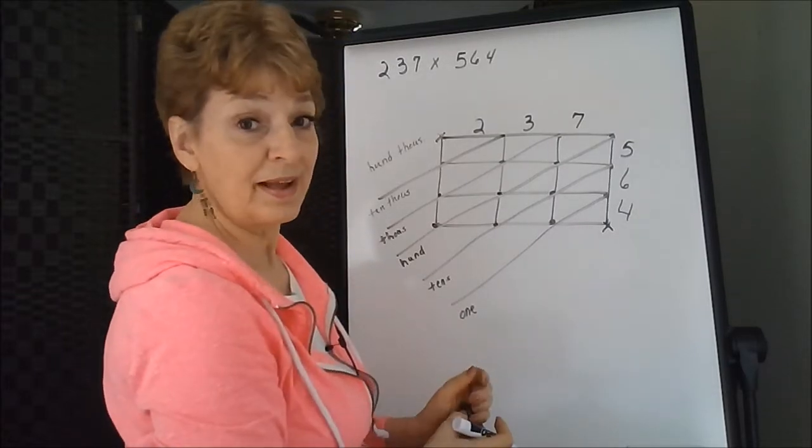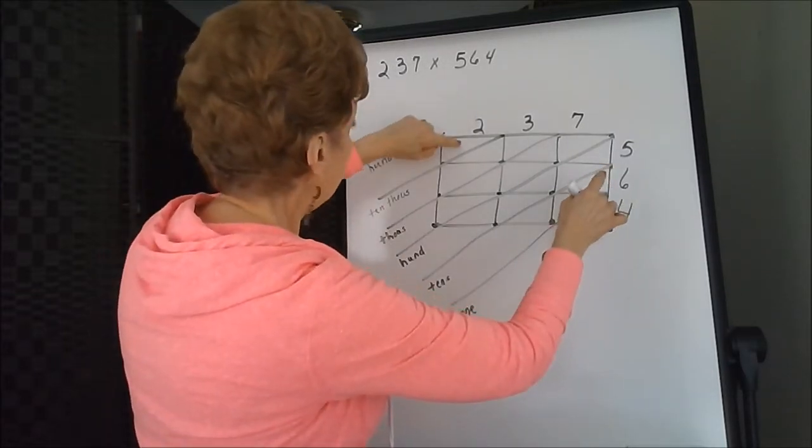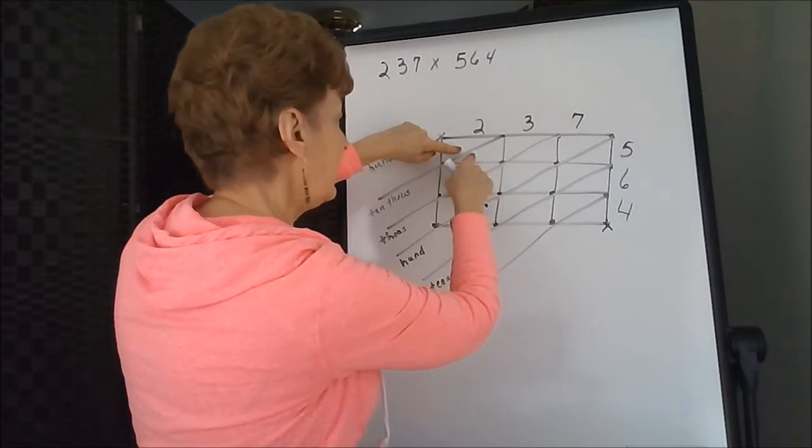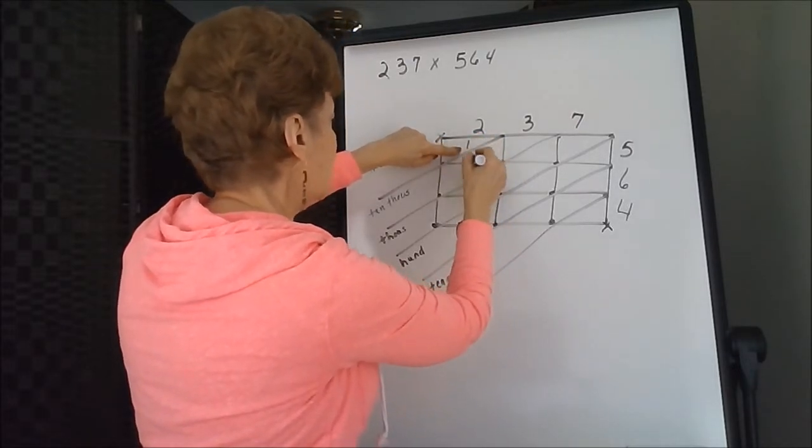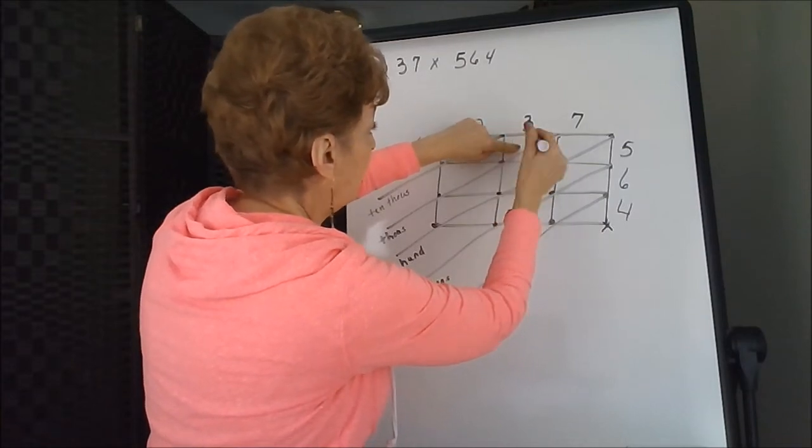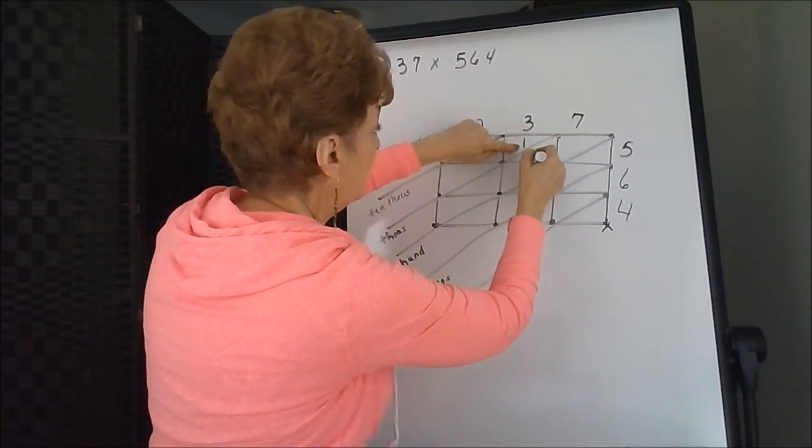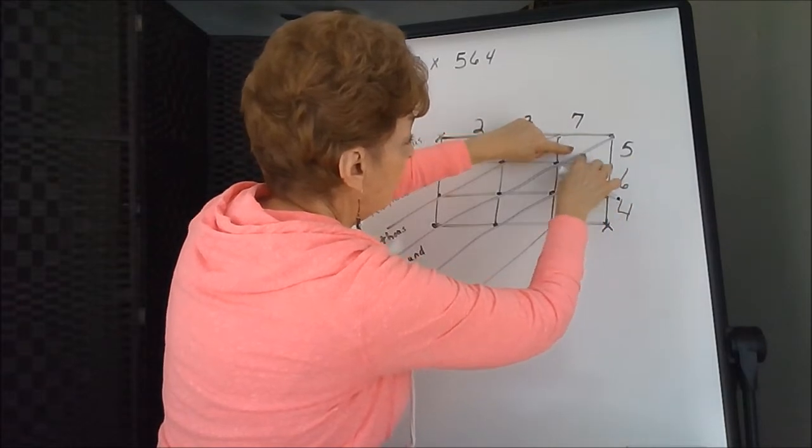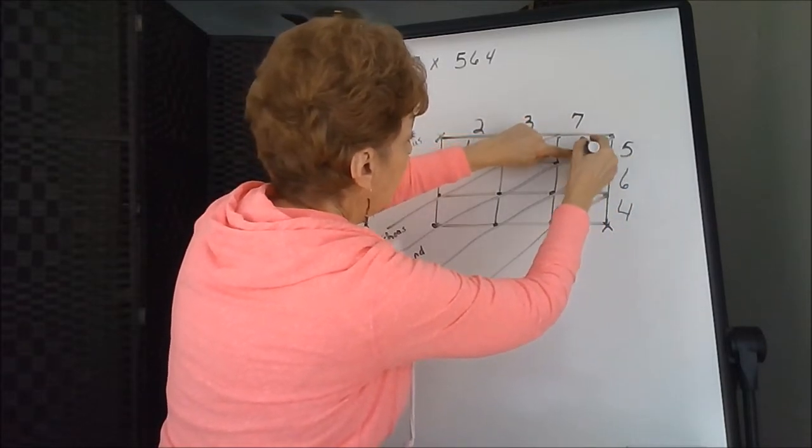Now we're going to multiply. Two hits the five in this box. Two times five is ten. Three and five intersect here at fifteen. Seven hits the five at thirty-five.